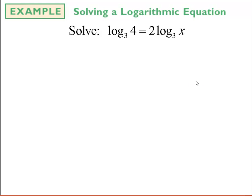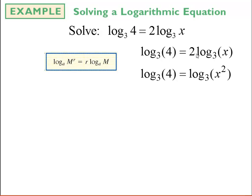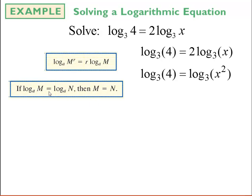Let's take a look at the first example. I notice I almost have two logarithms set equal to each other: log base 3 of 4 and log base 3 of x. But first, I have this coefficient of 2. So I'm going to bring that 2 inside as an exponent using the power rule, writing this as log base 3 of 4 equals log base 3 of x squared. Then, since the bases are the same, I can drop the logs and set the two insides equal to each other.